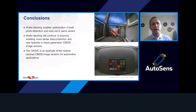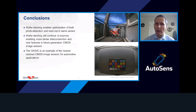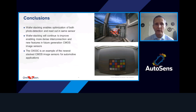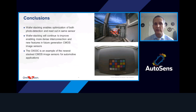In conclusion, wafer stacking enables independent optimization of both photo detection and readout circuitry in the same sensor — unlike older designs where trade-offs were forced by sharing the same substrate. Wafer stacking will continue to improve CMOS image sensors by enabling denser interconnections, more features, and better performance in the future. The OX03C is a strong example of the newest stacked CMOS image sensors for automotive applications.